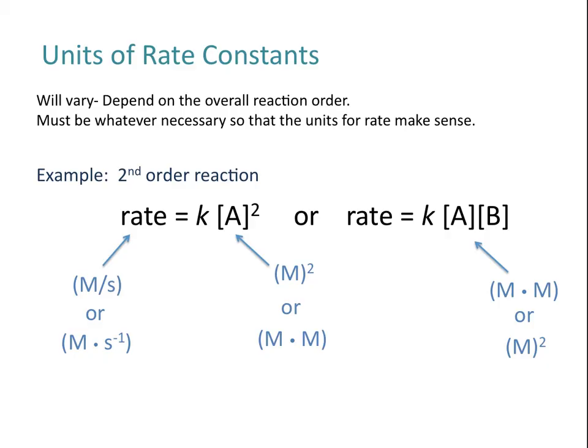The units for your rate constant are going to be different depending on the overall reaction order. For a second order reaction, our rate is molar times inverse seconds, but the concentration term on the other side is molar squared. That means the units of the rate constant are inverse molar times inverse seconds. To verify: if you take inverse molar times inverse seconds and multiply by molar squared, you're left with molar times inverse seconds — which are the correct units for rate.